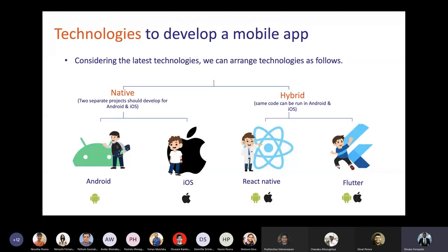There are three main types of creating mobile applications: native mobile application development, web mobile application development, and hybrid mobile application development. Let's go through each one by one.